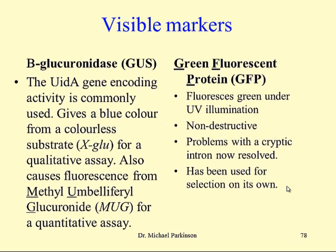There are two visible markers predominantly used in plant cell transformation: the GUS gene — beta-glucuronidase from E. coli — and the green fluorescent protein gene from jellyfish. You may know from microbiology practicals that plating cells on medium containing the substrate X-glue gives blue colonies if E. coli is present. That gene has been taken from E. coli and used in plasmids for plant transformation, giving a blue colour from the colourless X-glue substrate. There's also the substrate methylumbelliferyl glucuronidase (MUG), which fluoresces and provides a sensitive quantitative assay for transformation.